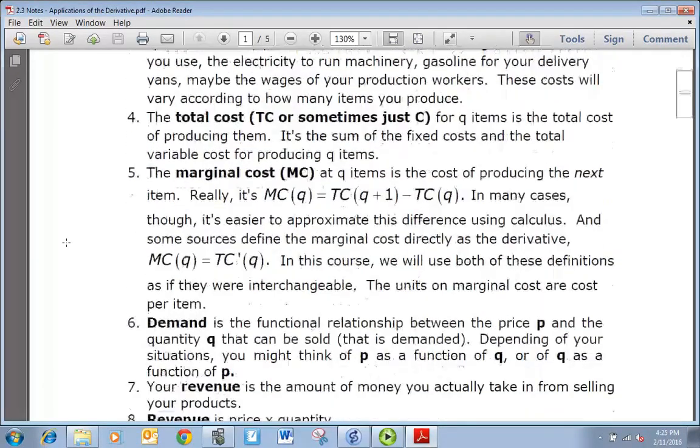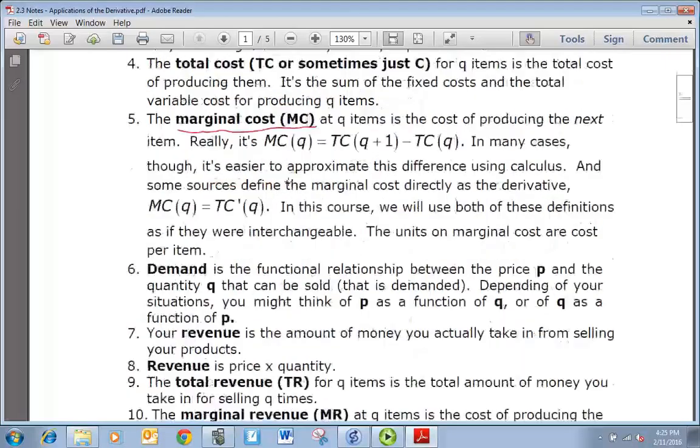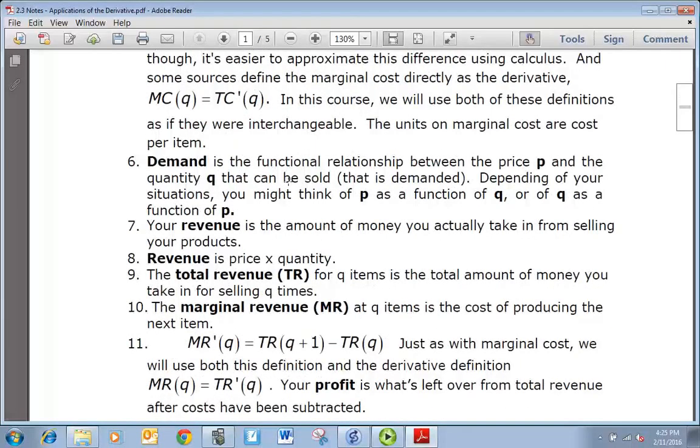Marginal cost, now that one is probably a new one or might be a new one to you, or you might have heard of it before. It's the cost of producing the next item. Companies sometimes want to know, okay, we know the costs of however many we're making now, but what if we wanted to do just one more item, how much would that cost?